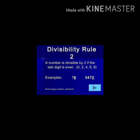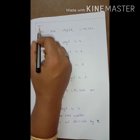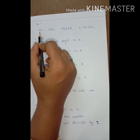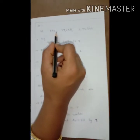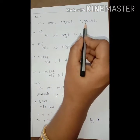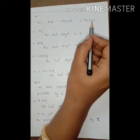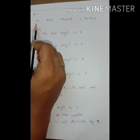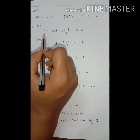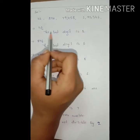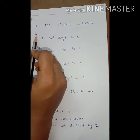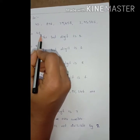We are going to learn some examples of the divisibility rule by 2: 42, 896, 79,458, 2,95,346. In 42, the last digit is 2. Is 2 an even number or an odd number? 2 is an even number. So 42 is divisible by 2.